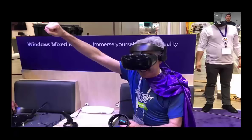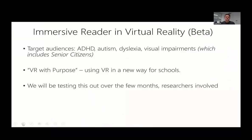The other exciting thing we're doing is we've actually moved into virtual reality with the learning tools space. You may ask why you'd put Immersive Reader and accessibility tools into VR — and that's because it's an absolute reduction of distraction. We're seeing kids with ADD, ADHD, autism, and also people with a visual impairment benefit. We've been working with senior citizens — people who couldn't read for years are suddenly able to read things in a VR headset, where text is the size of a billboard. We're calling that VR with purpose. It's available now inside learning tools, but in terms of being feature-rich, it's still being developed — watch this space.